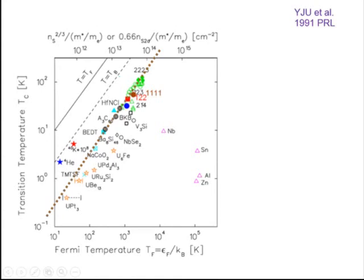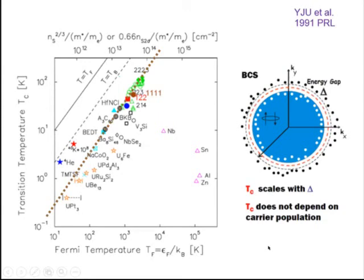We see that the linear relationship appears in this linear axis. Not only in cuprates, but also in C60, BEDT, and many other unconventional superconductors, the ratio of TC versus this effective Fermi energy is very high — much higher than conventional BCS simple metal superconductors. This is, in my opinion, a very important signature that these new superconductors are not doing BCS-like condensation.